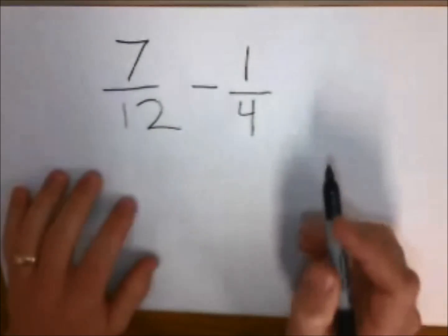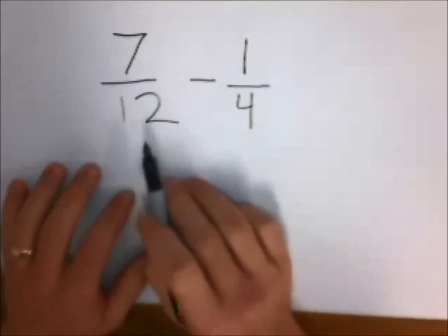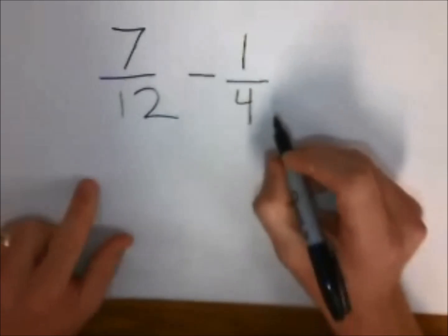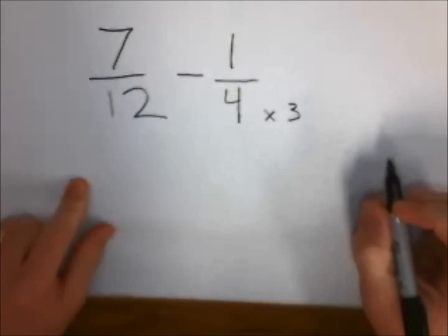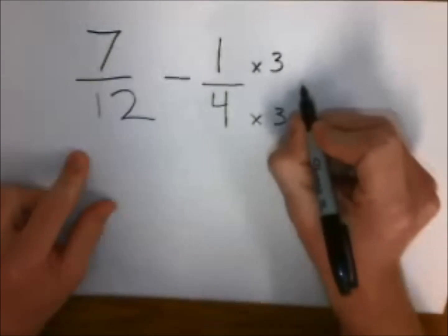When we look at these numbers, first off we know that 4 is compatible with 12 because 4 goes into 12 three times. So we take 4 times 3, same to the bottom as the top, and we are going to make an equivalent fraction.